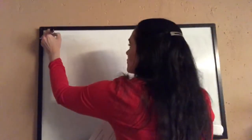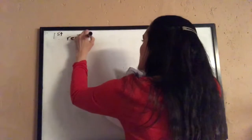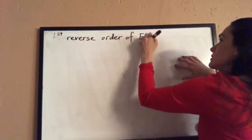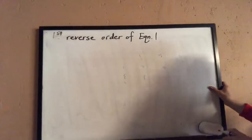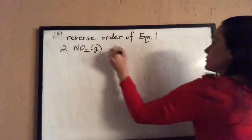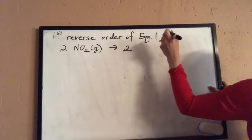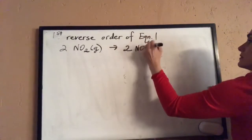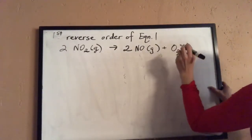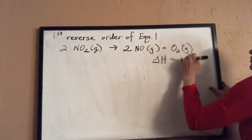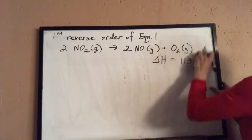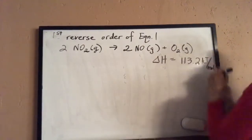Step one: reverse the order of equation one. When we reverse that order, we now have two moles of nitrogen dioxide gas yielding two moles of nitrogen monoxide gas and one mole of oxygen gas. The heat must be changed as well, so now we have a positive 113.2 kilojoules per mole.